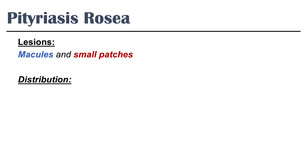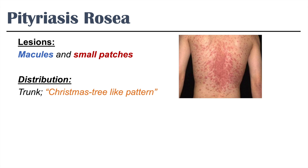They have a particular distribution in Pitoriasis Roja. They are generally located on the trunk, and they have what we call a Christmas tree-like pattern of distribution. So you might not be able to see a Christmas tree in this image here, but if you can think about it,